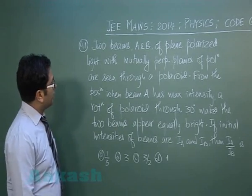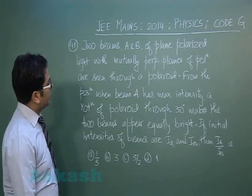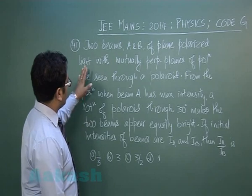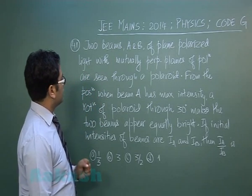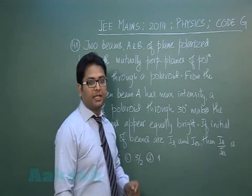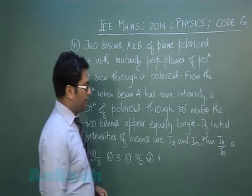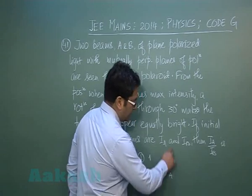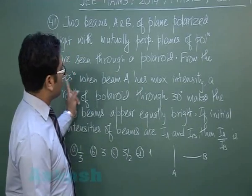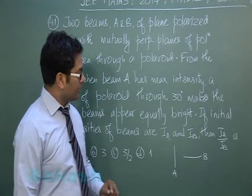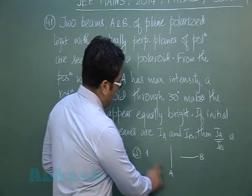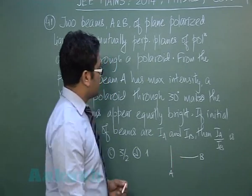Question number 41 is from wave optics and polarization. Two beams A and B of plane polarized light with mutually perpendicular planes of polarization are seen through a polaroid. From the position when beam A has maximum intensity, A and B have perpendicular planes. When A has maximum intensity, the polarizer is parallel to A, and at that situation, B would have zero intensity.